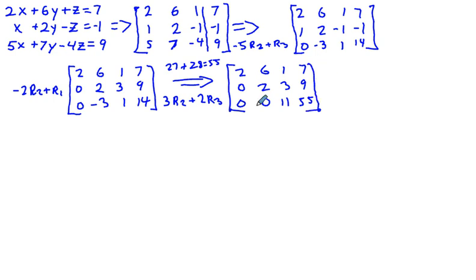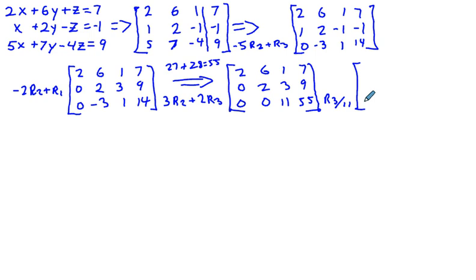Row three is now almost done. We divide row three by 11, giving us 0, 0, 1, 5 in the lower row, since 55 divided by 11 is five. Rows one and two are rewritten unchanged.